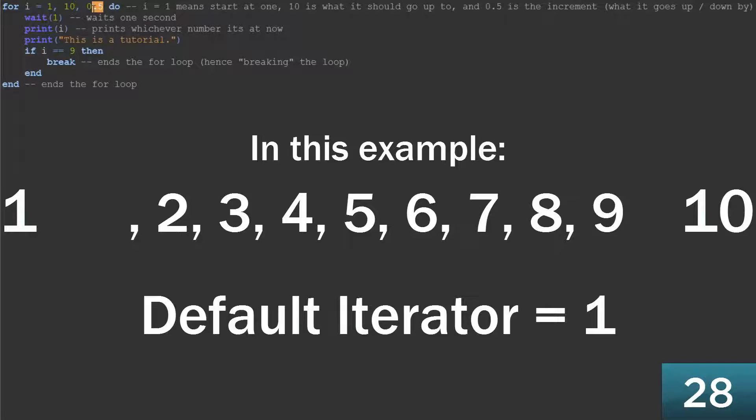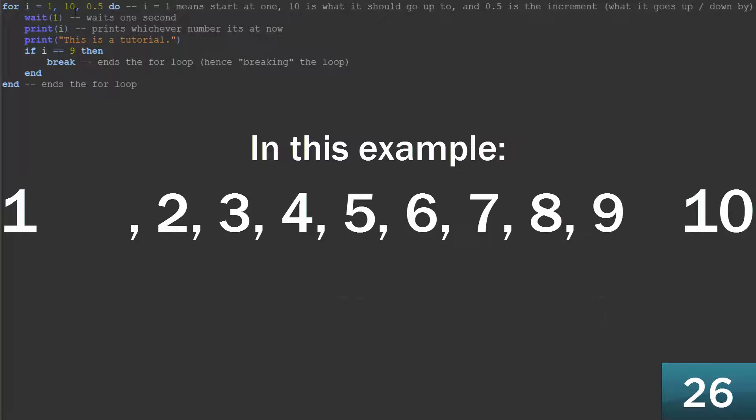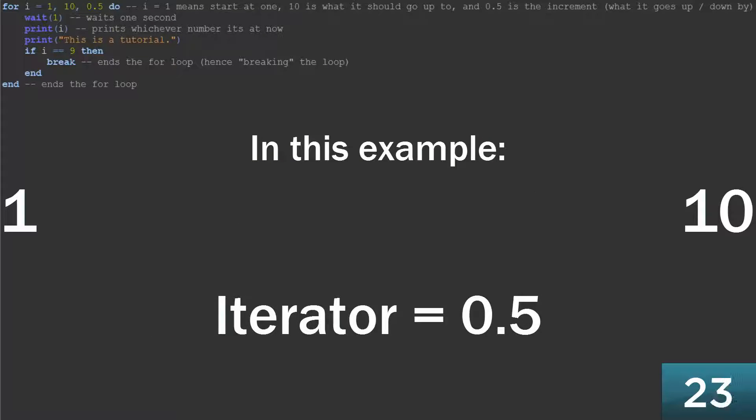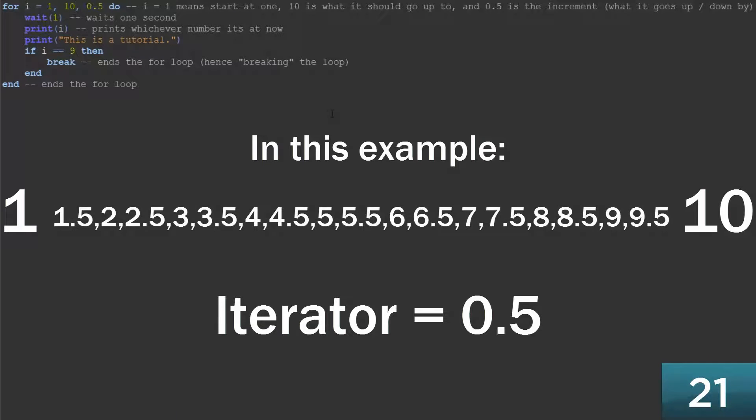But here, on this script you don't have to have this, but I've got a thing that says 0.5 here, which means instead of going 1, 2, 3, 4, 5, 6, 7, 8, 9, 10 it now goes up by 0.5 every time, so now it runs 20 times instead of 10 times.